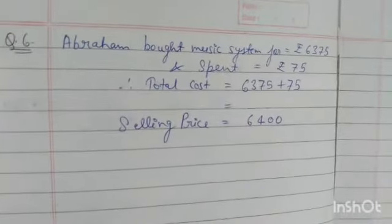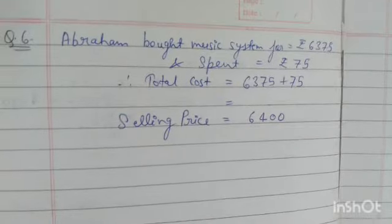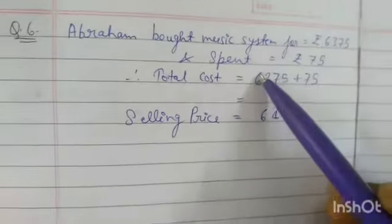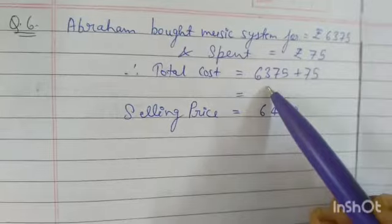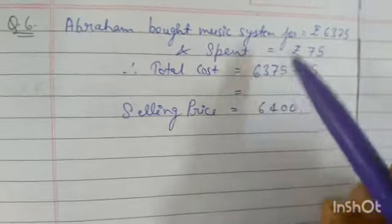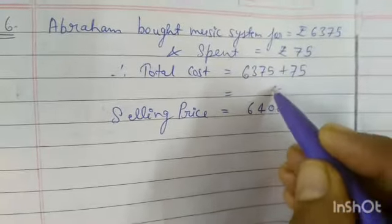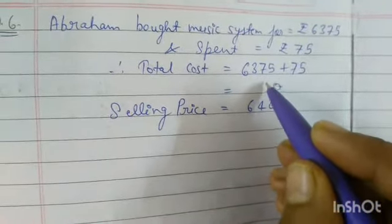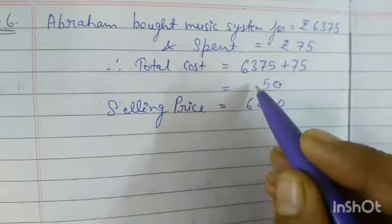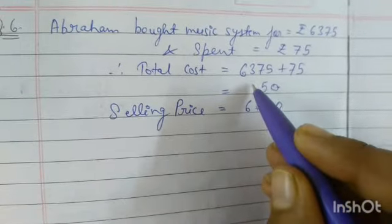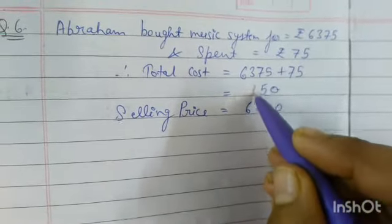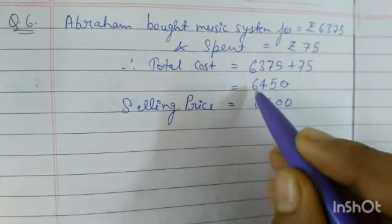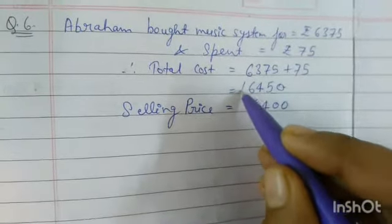Question number 6. Abraham bought a music system for rupees 6,375 and spent rupees 75 extra. Total cost: 5 plus 5 is 10, 7 plus 7 is 14 plus 1 is 15, then 3 plus 1 is 4 and 6. Total cost is 6,450 rupees.